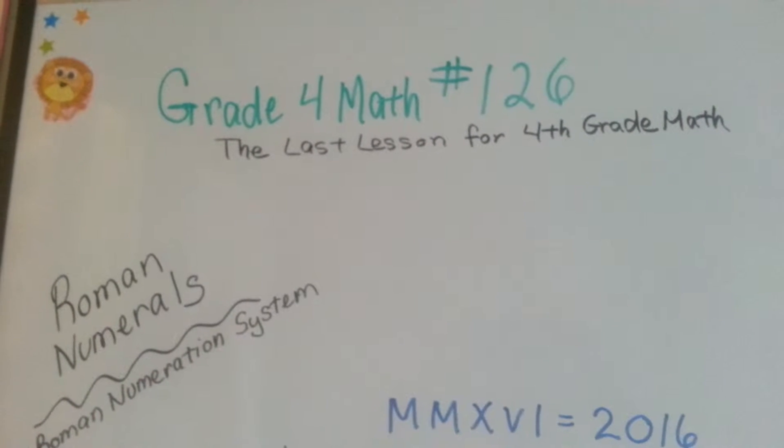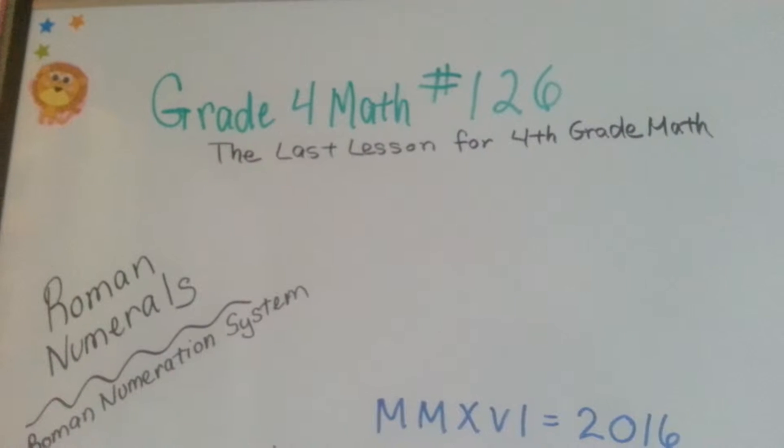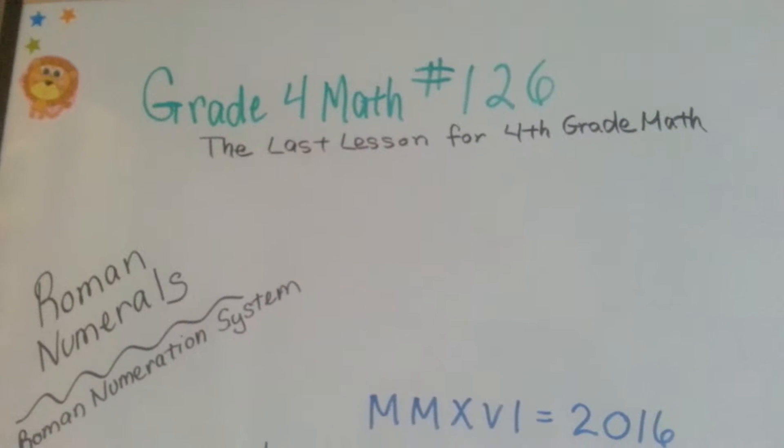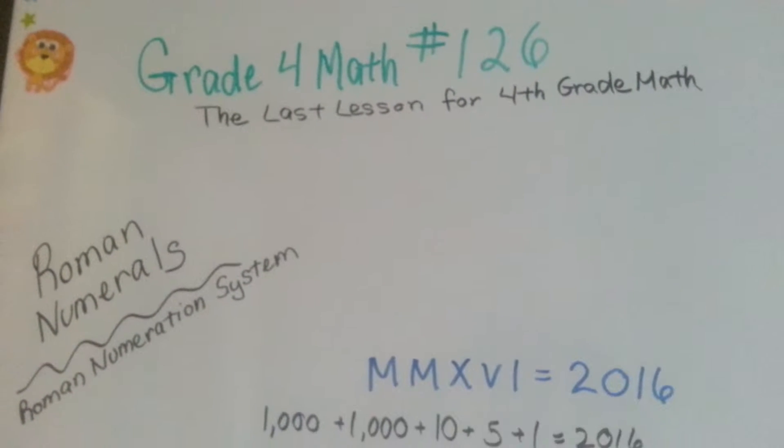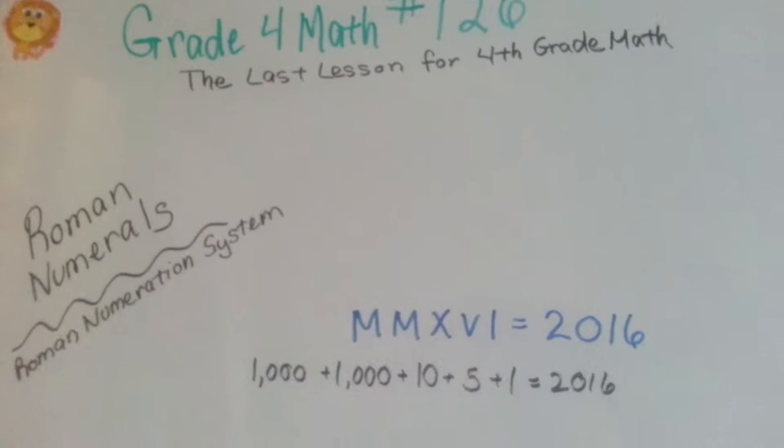Grade 4 math number 126. This is the last lesson for 4th grade before we move on to 5th grade math. We're going to cover Roman numerals and the Roman numeration system.